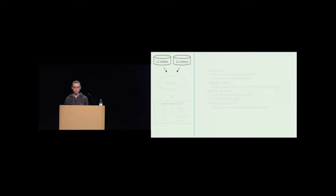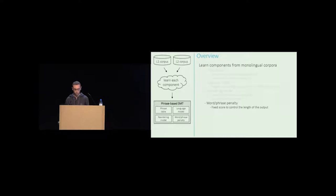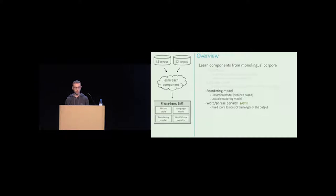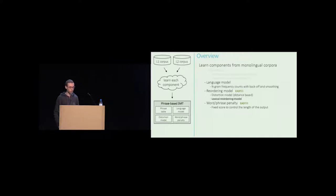Given our monolingual corpora in language 1 and language 2, all the magic we need to do is learn each of these components — and it turns out this is easier than we might think. The word and phrase penalties assign a fixed score, so there's nothing to learn. For the reordering model, the lexical reordering part is difficult since it's learned from parallel corpora, but we can simply use the distortion model alone at some small cost. The language model only requires target-language monolingual data, which we have. So the only truly difficult part is the phrase table.